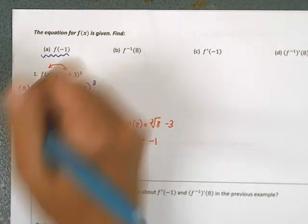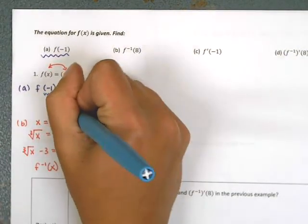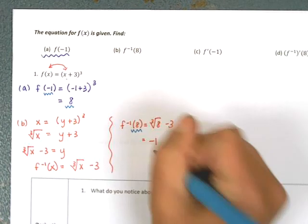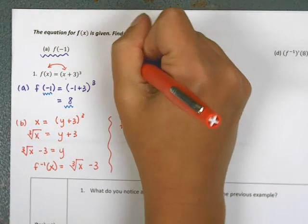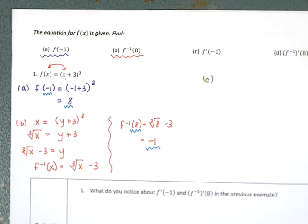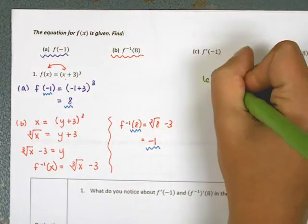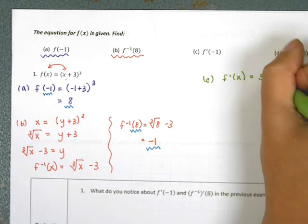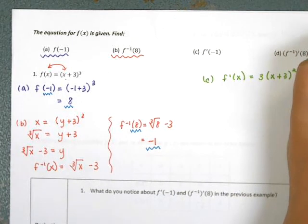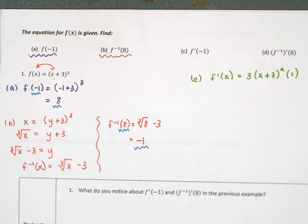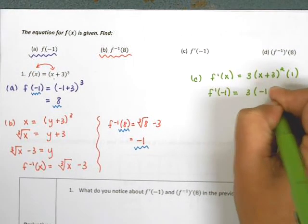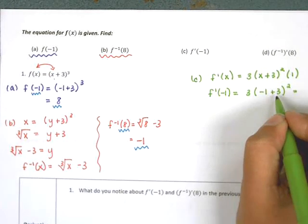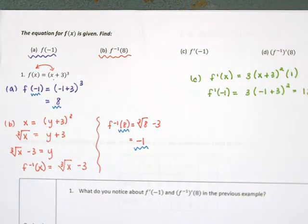Notice that when we plugged −1 into the original we got 8, and when we plugged 8 into the inverse we got −1. That makes sense because the x and y values are switched. Now part c: find the derivative of the original at −1. The derivative is 3(x+3)². Chain rule gives times 1. Plugging in −1: 3(−1+3)² = 3(2)² = 3(4) = 12. So the derivative at −1 is 12.